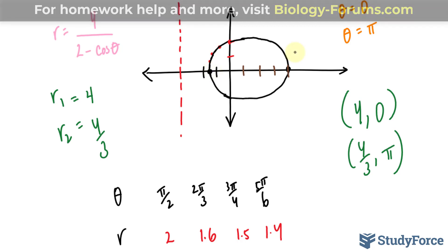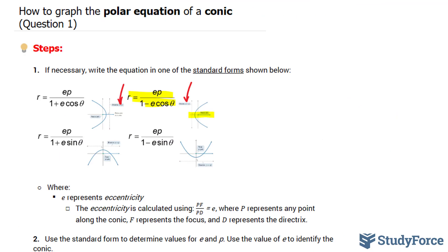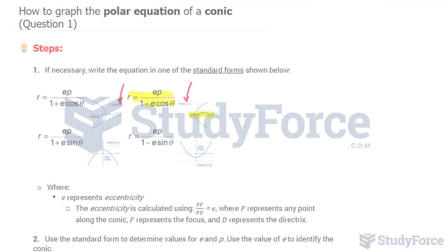That's my sketch, and of course if you want to be more accurate, you would need to take into account symmetry, you would need to take into account more points, and eventually you would end up with a perfect looking ellipse on a polar plane. And there you have it. That is how to graph a polar equation for a conic.